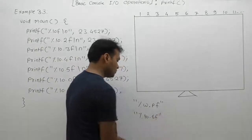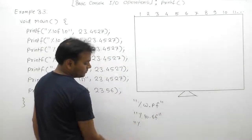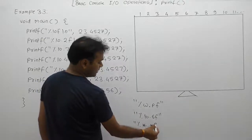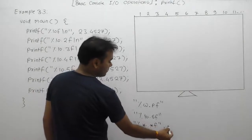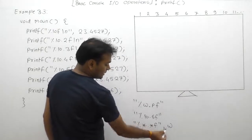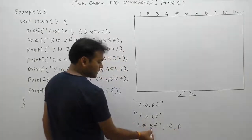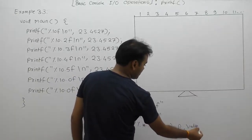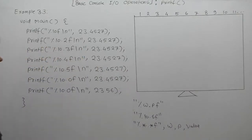It also supports dynamic width as well as dynamic precision with the help of asterisks. Here the first argument will replace the first asterisk, the next argument will replace the second asterisk, and the third argument will supply the exact floating point number value.